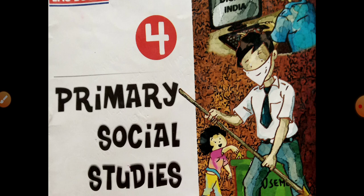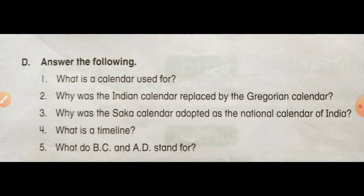We will solve the question and answer of Chapter 3. The chapter name is Almanac — Panchang. Your chapter name is Almanac. So students, note down Question Number 1: What is a calendar used for?